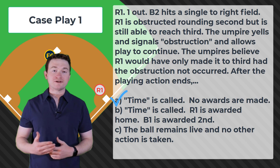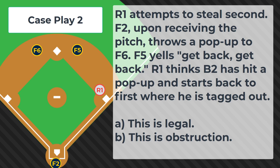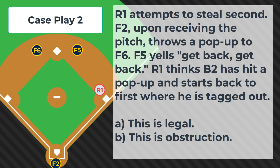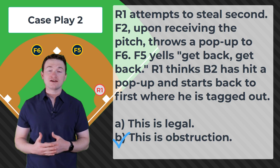Case play number two: R1 attempts to steal second. F2, upon receiving the pitch, throws a pop-up to F6. F5 yells 'get back, get back.' R1 thinks B2 has hit a pop-up and starts back to first, where he is tagged out. Is this legal or is this obstruction? The correct answer is this is obstruction — this is verbal obstruction. In NFHS rules, this counts as obstruction and the runner would be awarded second base.